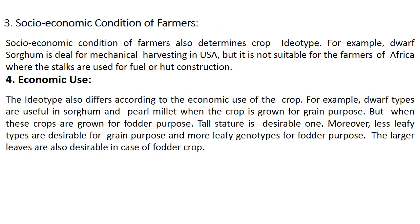Socio-economic conditions also matter — for example, dwarf sorghum is ideal for mechanical harvesting in the USA but is not suitable for farmers in Africa and Asia where stalks are used for fuel or hut construction. Economic use also affects idiotype: dwarf types are useful in sorghum and pearl millet for grain purpose, but for fodder purpose, tall structure is desirable, and more leafy genotypes are preferred for fodder, while less leafy types are desired for grain purpose.